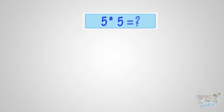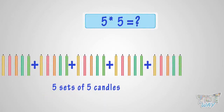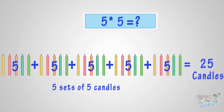What is 5 multiplied with 5? It is the same as 5 sets of 5 candles. 5 plus 5 plus 5 plus 5 plus 5 equals 25. So, it is 25 candles. That is, 5 multiplied by 5 is 25.